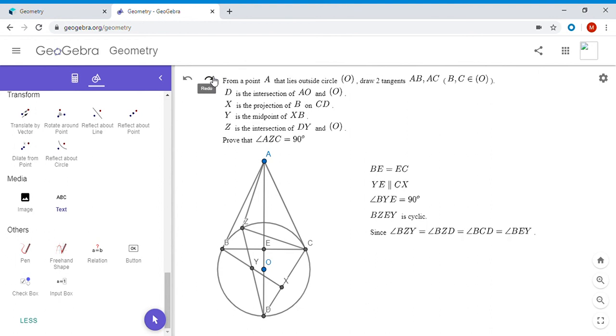First of all, we want to show that BZEY is cyclic. And so one way to do that is we want to show that angle BZY is equal to angle BEY. But angle BZY is angle BZD, but that's angle BCD, since those two angles intercept the same arc. But then since YE is parallel to CD, we have BCD is equal to BEY. So by the transitive property we have BZY is BEY, and so BZEY is a cyclic quadrilateral.